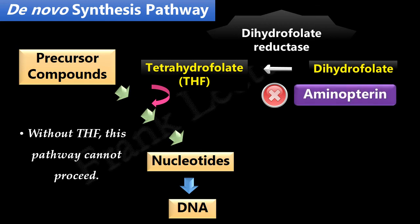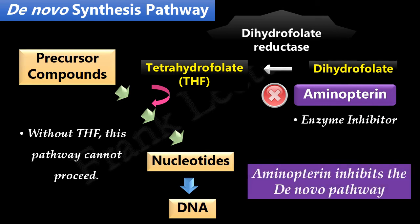One such drug that inhibits formation of tetrahydrofolate is aminopterin. It is an enzyme inhibitor — it competes for the folate binding site of the enzyme dihydrofolate reductase and thus blocks tetrahydrofolate synthesis. Overall, we can say that aminopterin blocks the de novo pathway of nucleotide synthesis.